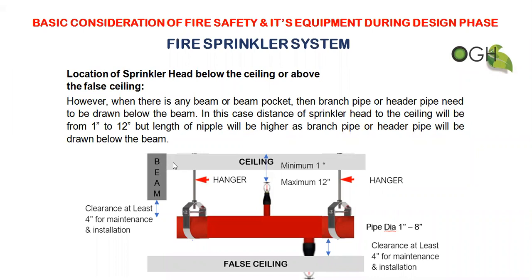The beam construction is going to be high, so we see that the beam is going to be high. This is the minimum 4-inch gap for maintenance and installation. The floor ceiling is installed in the spring, and the space is located in the ceiling space. If there is a beam of construction, you can see that the space is located in the ceiling. You can see there is a pipe in the air-conditioning system.